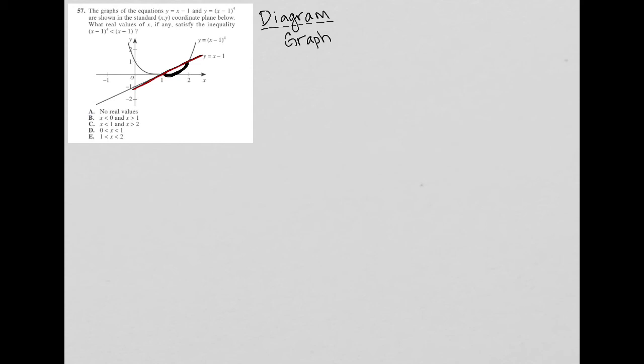Okay. So then where does that happen? What are the X values where that happens? Well, that happens between X equaling positive 1 and X equaling positive 2. This is the region that this is true.